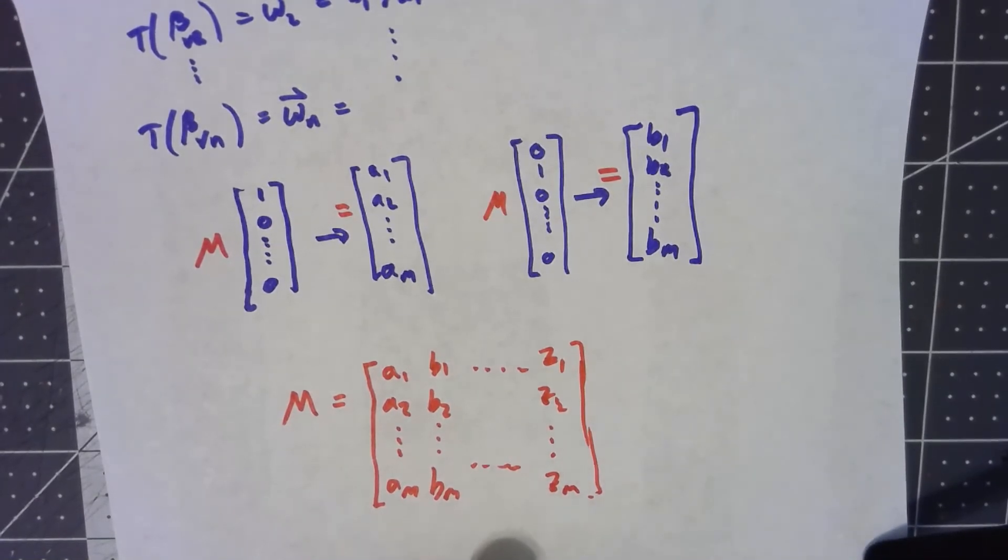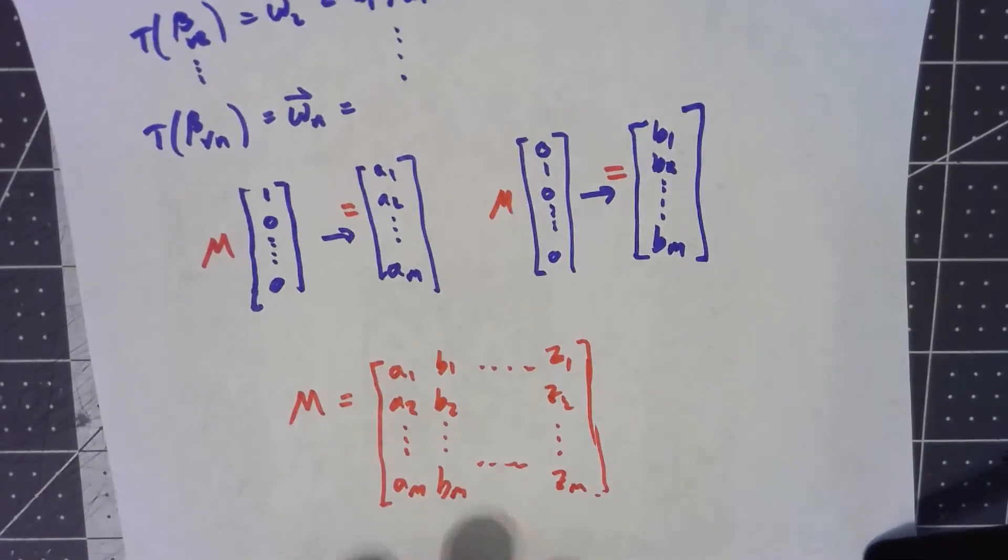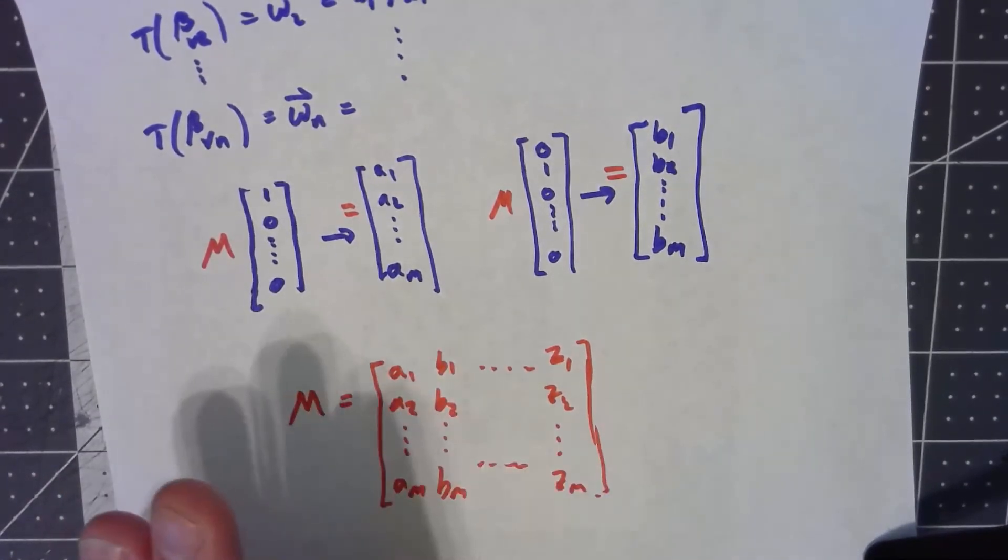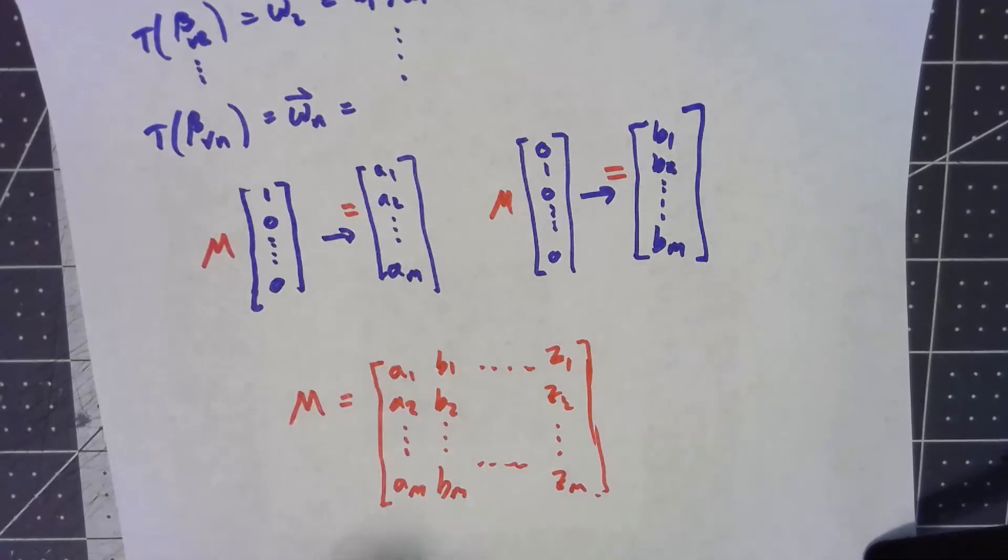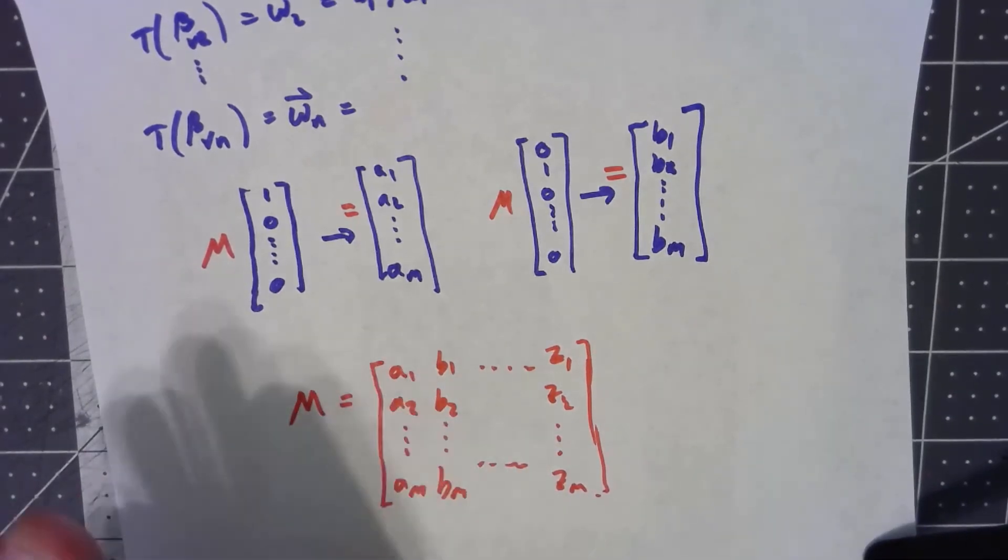So immediately this matrix takes coordinate vectors to coordinate vectors in the same way that the original linear transformation took vectors to vectors of W. Let's go ahead and stop this video here and let's do a specific example rather than trying to talk in general in the next video.